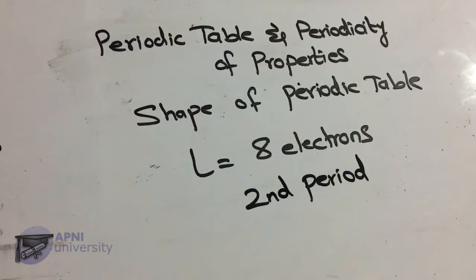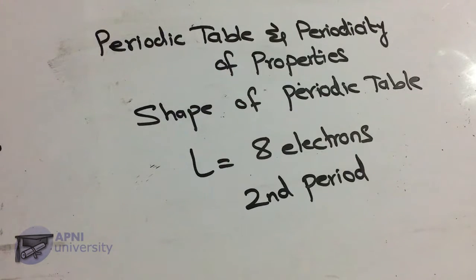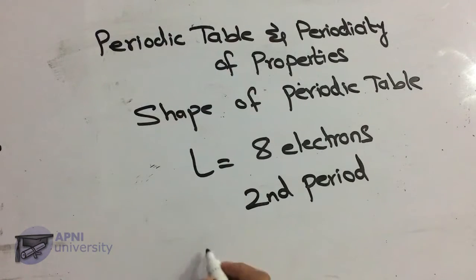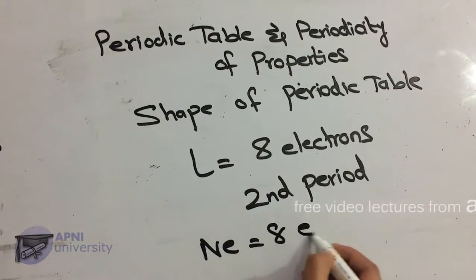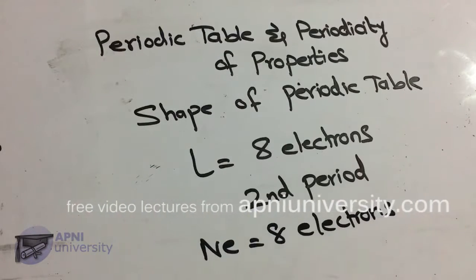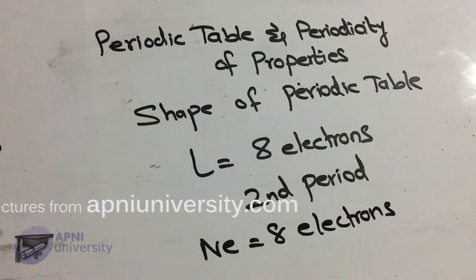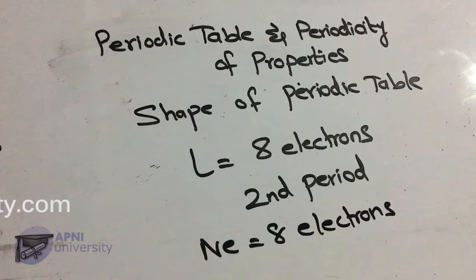Since L shell can accommodate eight electrons, so eight elements come in the second period. Har shell ki ek accommodation capacity hoti hai — K shell mein sirf two electrons, L shell mein sirf eight electrons accommodate ho sakte hain. Second period ends at neon, which has eight electrons in the L shell.